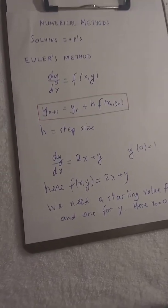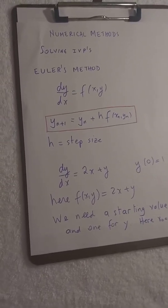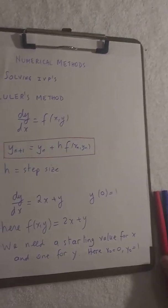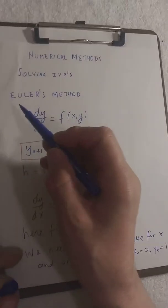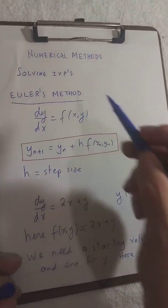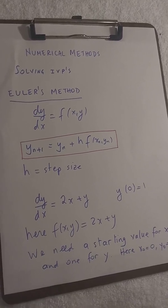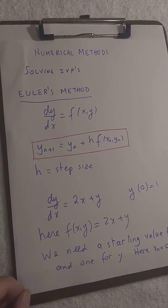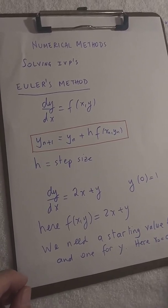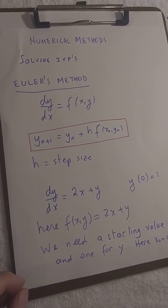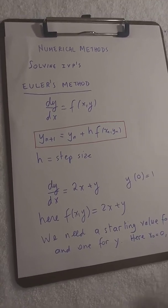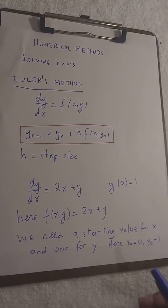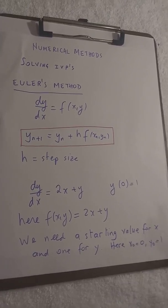We're going to go over some numerical methods for solving differential equation IVPs. We're going to start with Euler's method. The form of differential equation we're going to solve, or IVP, is dy/dx equals f of x, y on the right side. We're usually given some initial condition — it's an initial value problem, so they give us an initial condition.